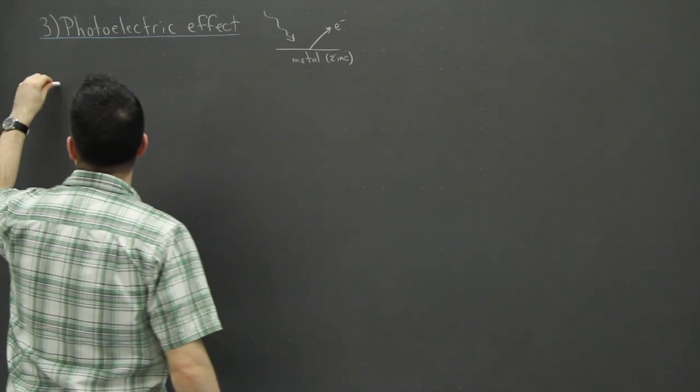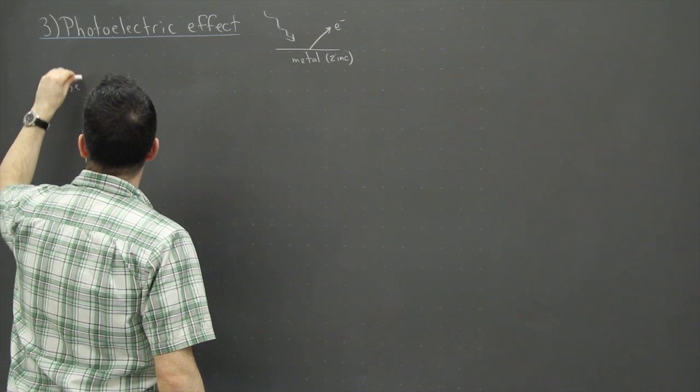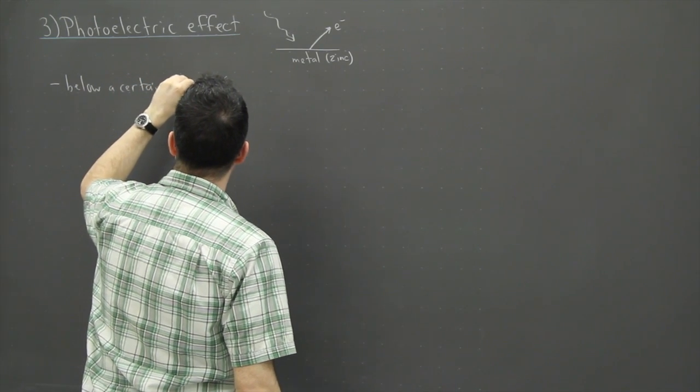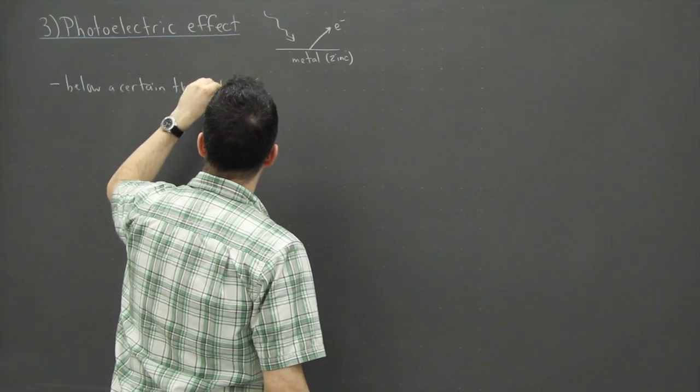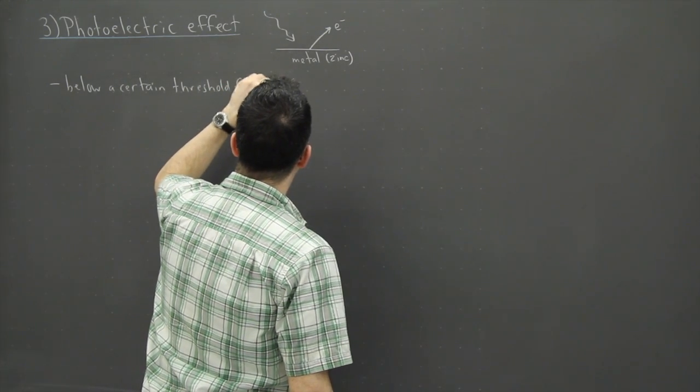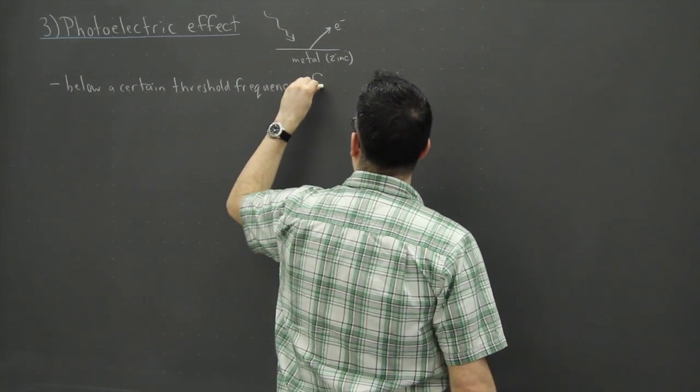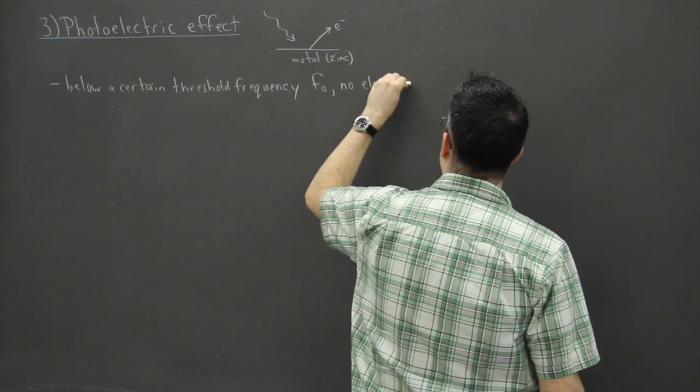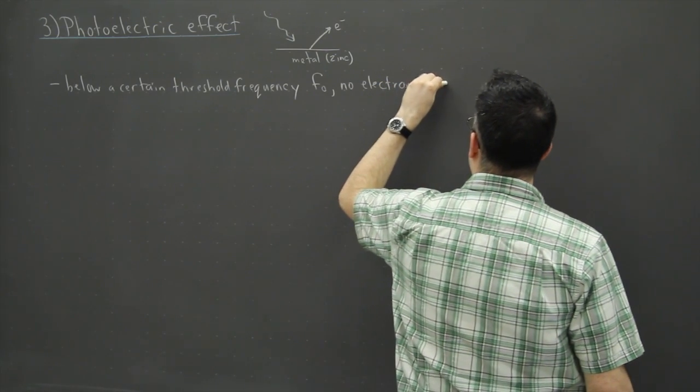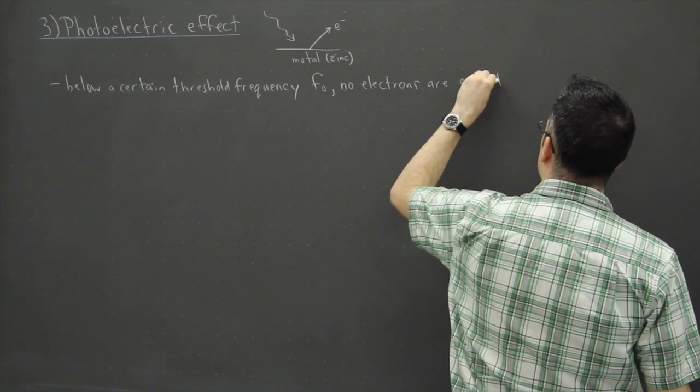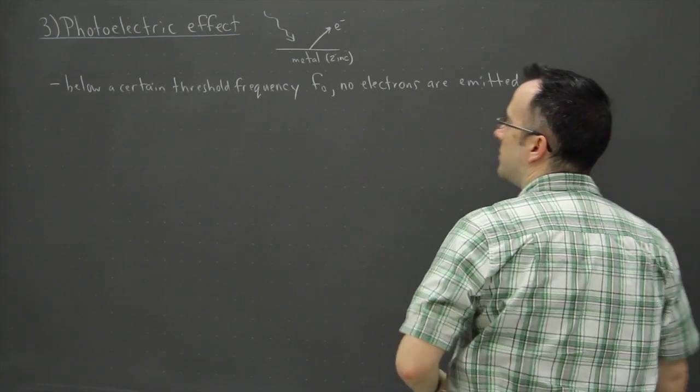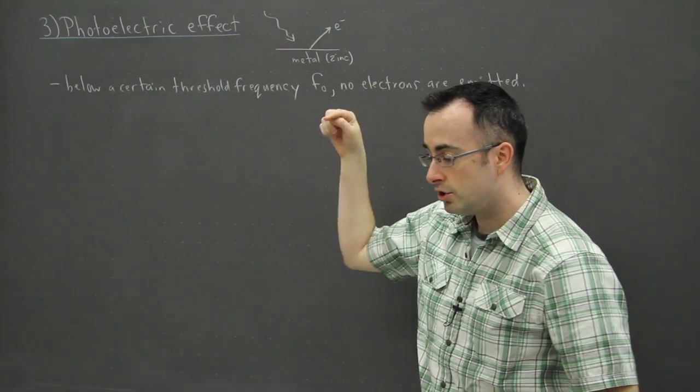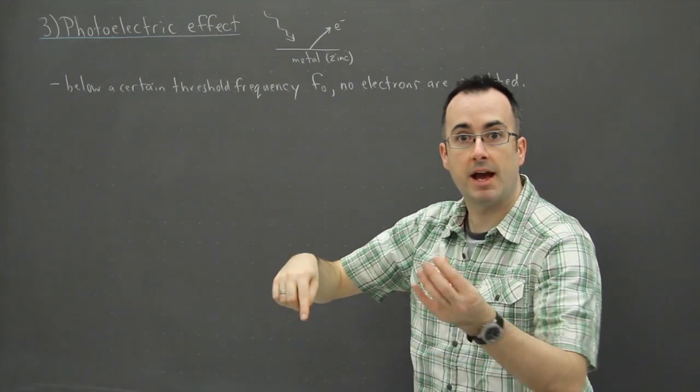Now it has a few features, so below a certain threshold frequency, we're going to call that F0, no electrons are emitted. And this is really curious, this is what had scientists baffled. So what happened was, remember frequency of light has something to do with color. So basically you shine light of a certain color at this metal, nothing happens.